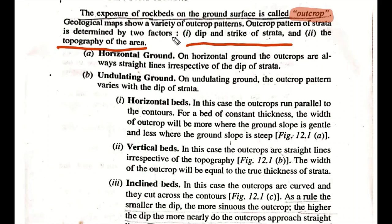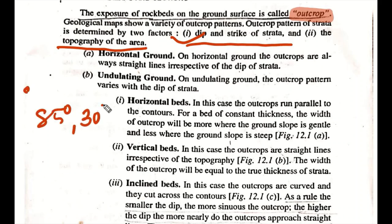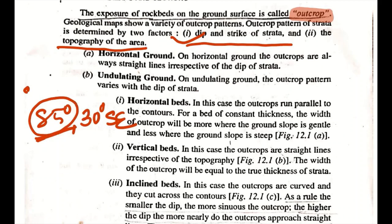For example, suppose the dip direction is 85 degrees and the dip amount is 30 degrees southeast. That means the strike direction is given, the dip amount is 30 degrees, and the dip direction is southeast.